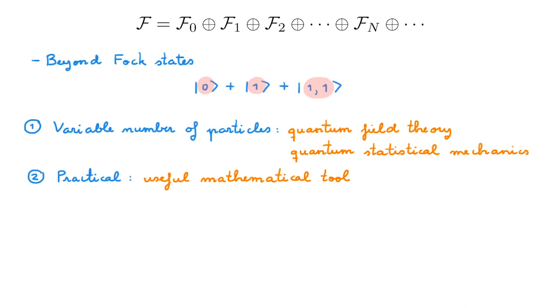In this context, Fock space provides a very natural language to study systems of identical particles. This is because the resulting mathematics is much simpler when compared to the many terms that one has to deal with if we instead use the symmetrized permanents or anti-symmetrized Slater determinants that I introduced in the video on the symmetrization postulate.